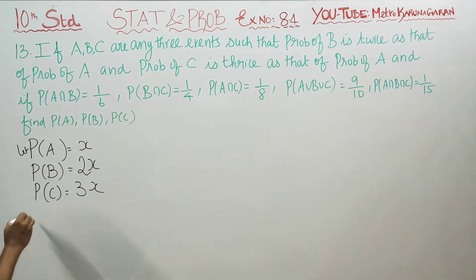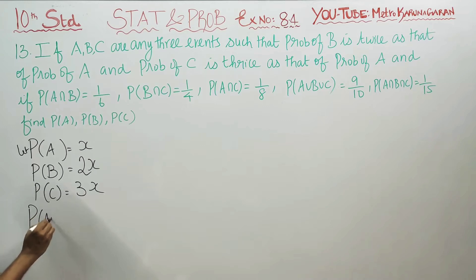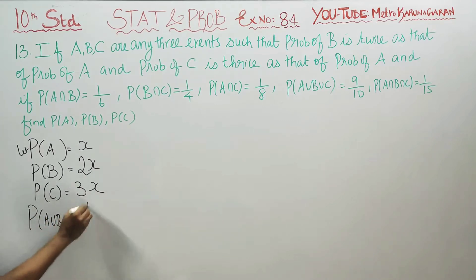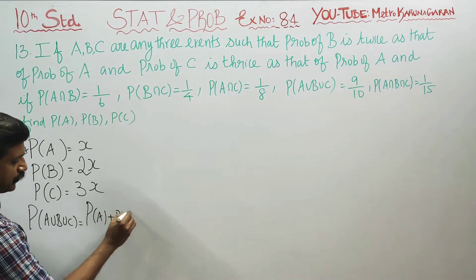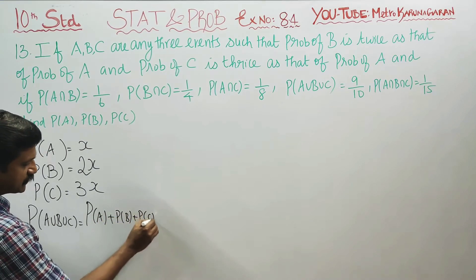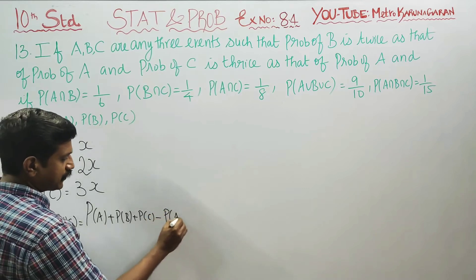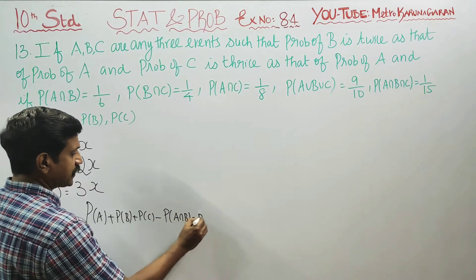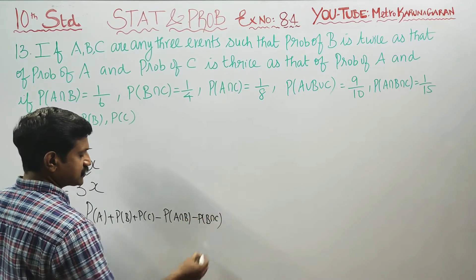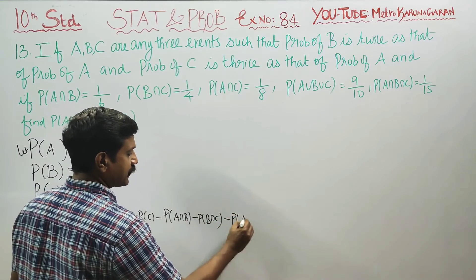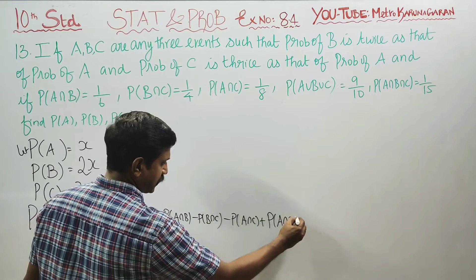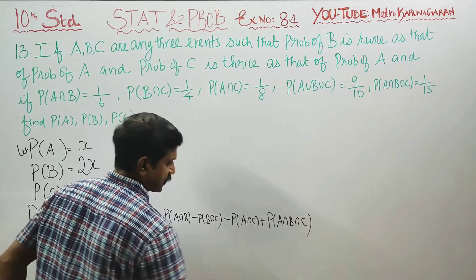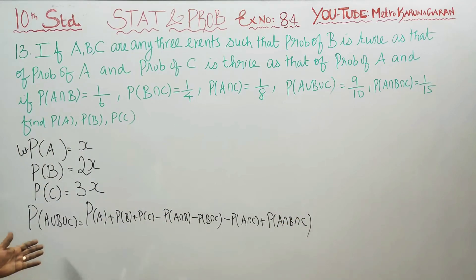We will start with the formula: probability of A union B union C is equal to probability of A plus probability of B plus probability of C minus probability of A intersection B minus probability of B intersection C minus probability of A intersection C plus probability of A intersection B intersection C. This is the formula for 3 events.